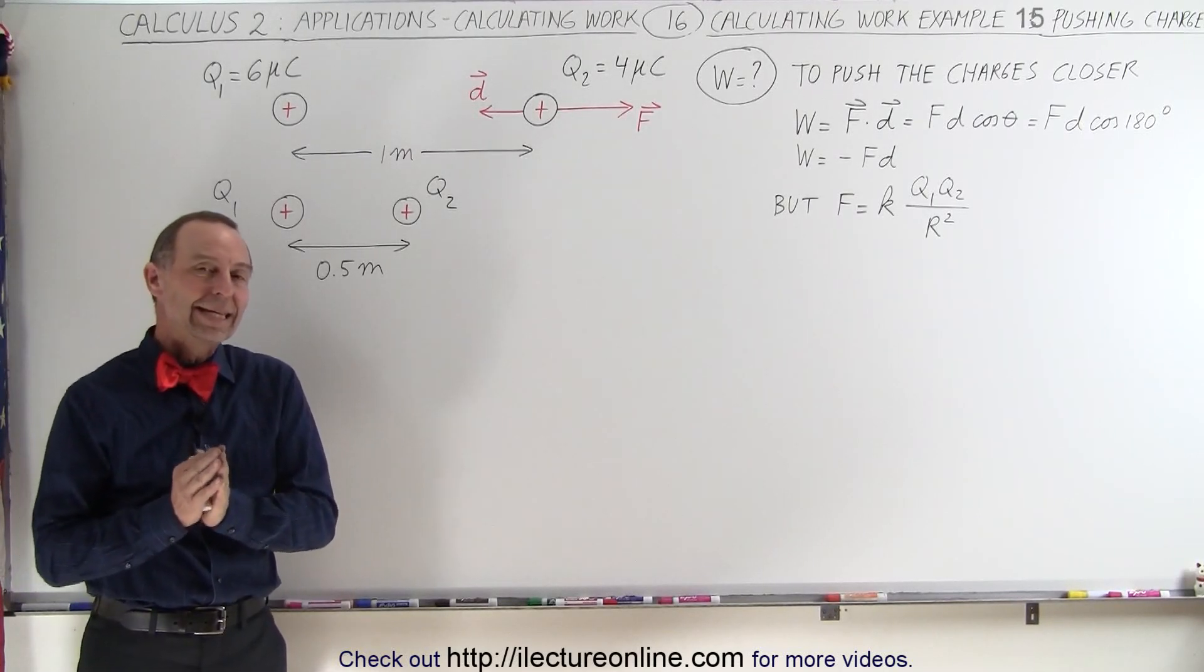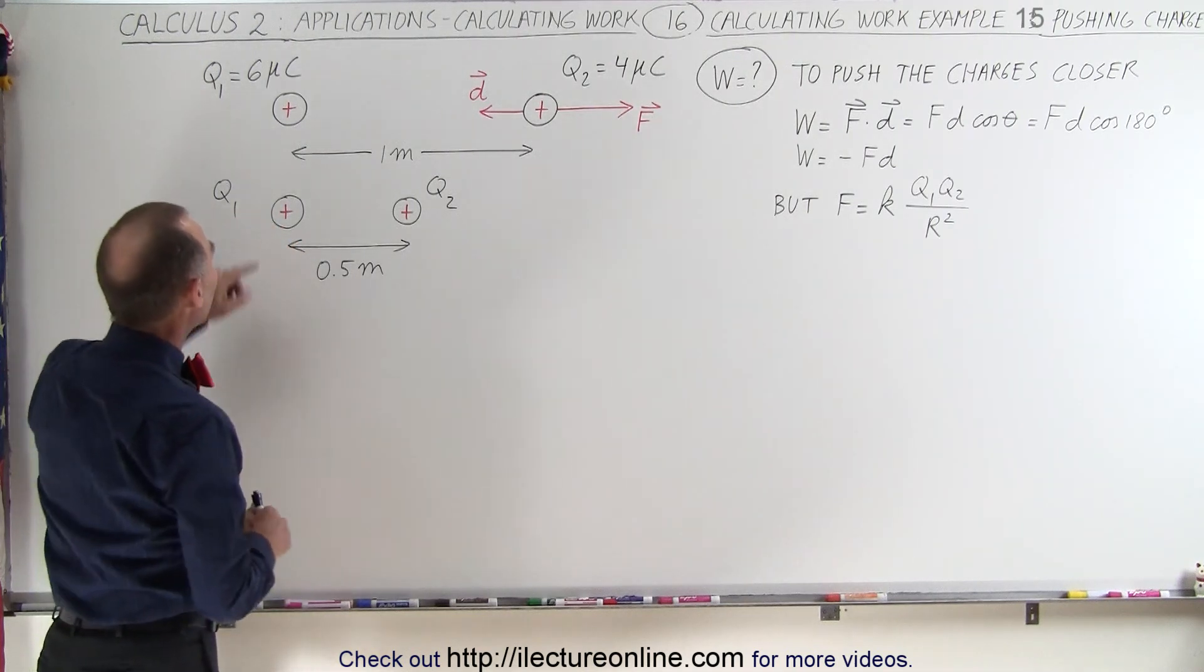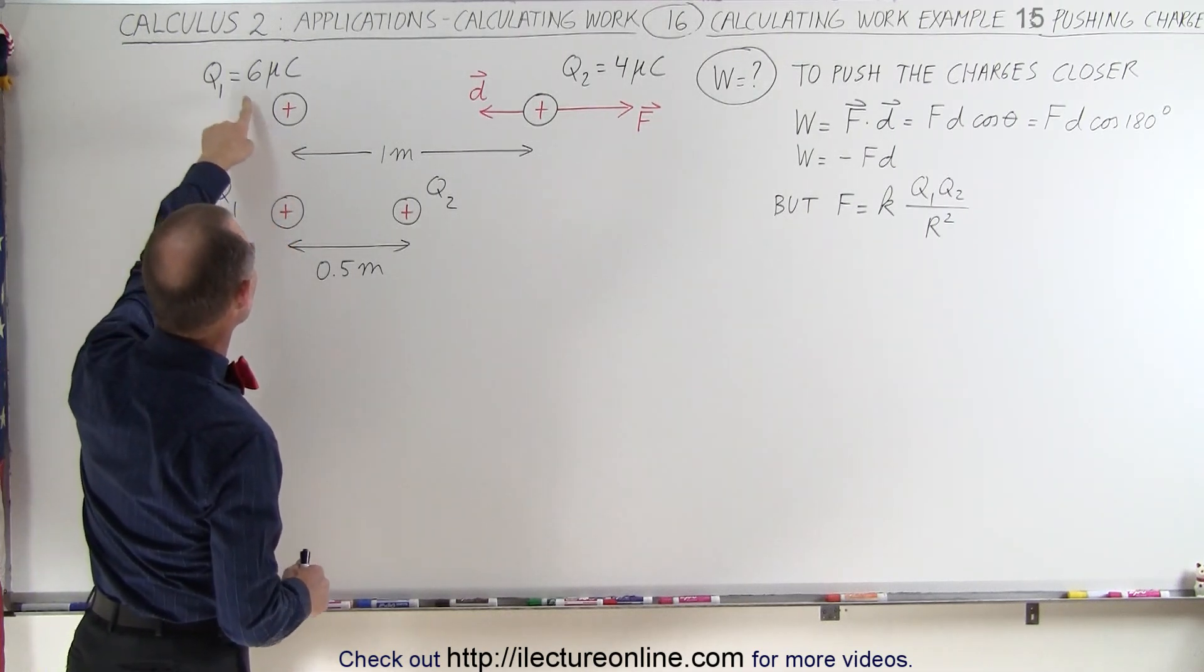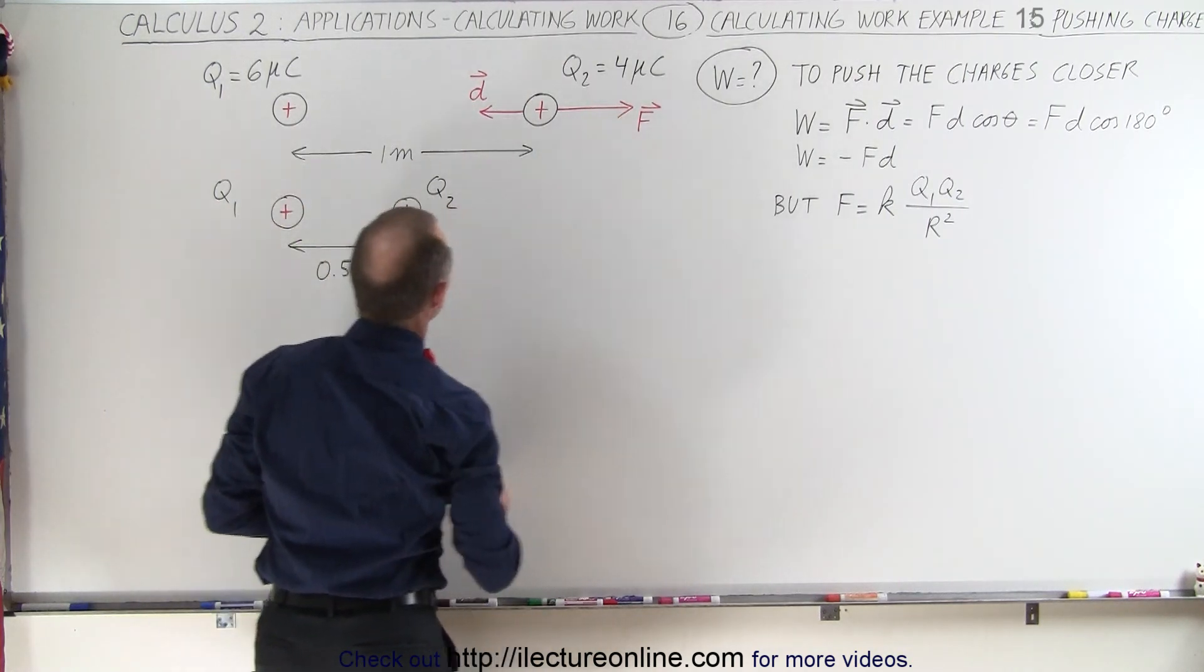Welcome to ElectronLine. Here we're going to push charge objects together. We have a first charge that has a charge of 6 microcoulombs and a second charge 4 microcoulombs of charge.